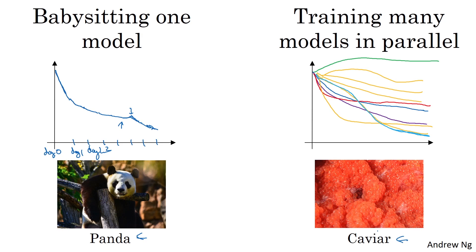So the way to choose between these two approaches is really a function of how much computational resources you have. If you have enough computers to train a lot of models in parallel, then by all means take the caviar approach and try a lot of different hyperparameters and see what works. But in some application domains, I see this in some online advertising settings as well as in some computer vision applications where there's just so much data and the models you want to train are so big that it's difficult to train a lot of models at the same time.